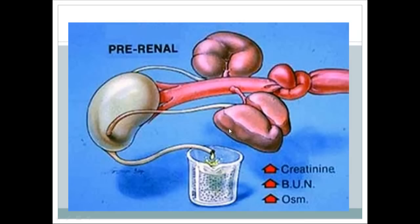This cartoon illustrates pre-renal acute renal failure, also called pre-renal azotemia. This occurs when blood supply to the kidneys decreases — anything that causes low blood pressure will reduce renal blood flow and result in pre-renal acute renal failure.